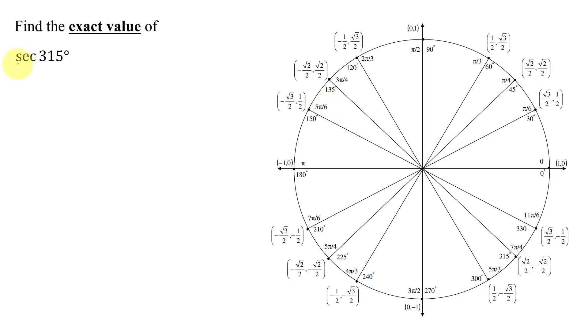Now remember, the secant of 315 degrees, the secant function is the reciprocal of the cosine function. So the secant of 315 degrees is 1 divided by the cosine of 315 degrees.